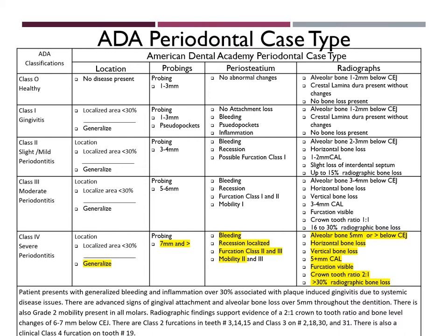There was generalized bleeding and localized recession in some areas. There were furcations of class 2 and class 3, as well as one class 4 furcation which was clinically visible. There were 4 areas of grade 2 mobility. In the radiographs, you will be able to see horizontal bone loss as well as vertical bone loss and alveolar bone loss of 5 mm below CEJ or more. There is also 5 mm loss of clinical attachment. Furcations are visible in the radiographs as well as clinically, and there is a poor crown to root ratio of 2 to 1.